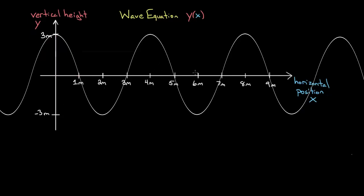And if I were to plug in an x value of six meters, it should tell me that y value is negative three. So no matter what x I plug in, it should tell me what the value of the height of the wave is at that horizontal position. Y should equal, as a function of x, no greater than three or negative three — and this is called the amplitude. So if we call the amplitude A, it's gonna be no bigger than that amplitude. In this case the amplitude would be three, but I'll write amplitude so this is a general equation that you could apply to any wave.